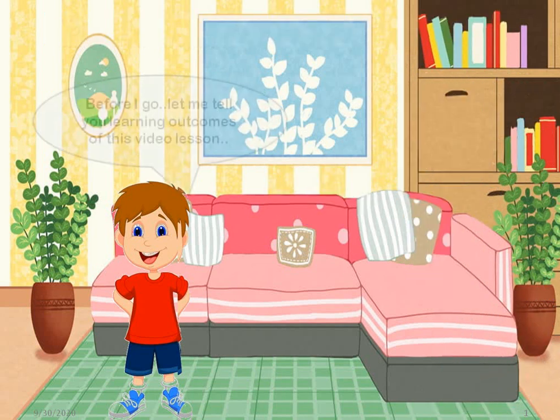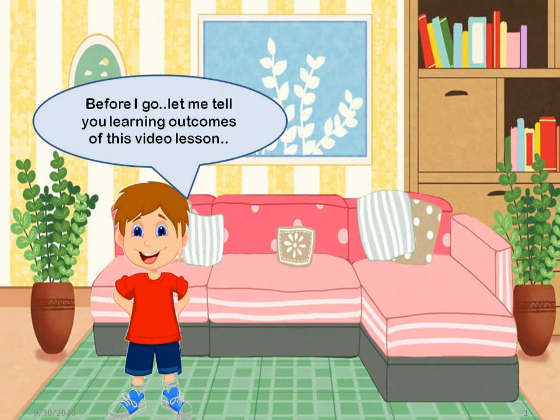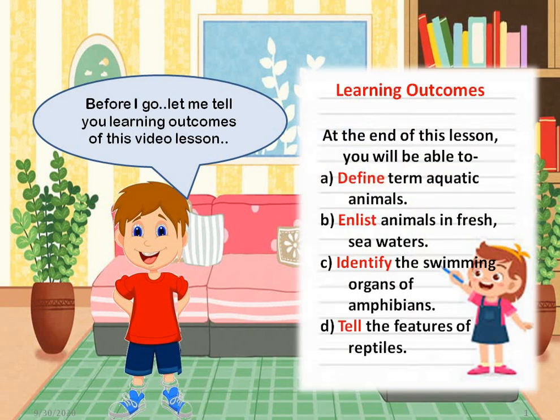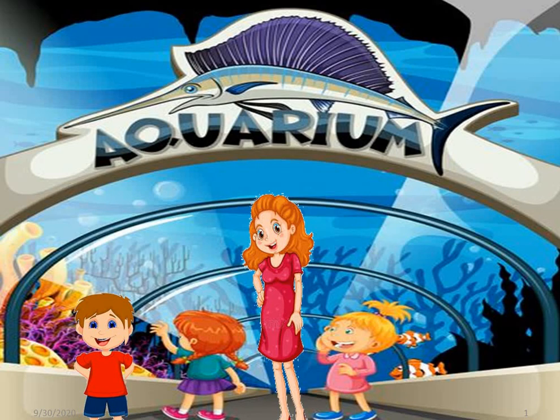Sure son. But before I go, let me tell you the learning outcomes of this video lesson. At the end of this video lesson, you will be able to: Number 1, define the term aquatic animals; enlist the animals in fresh and sea water; identify the swimming organs of amphibians; and tell the features of reptiles. So here I go to the aquarium.